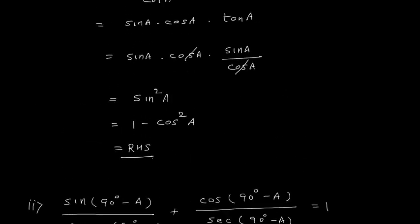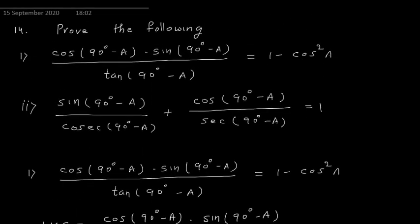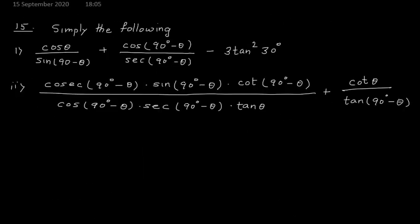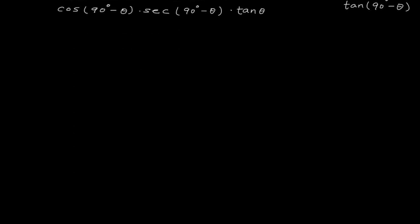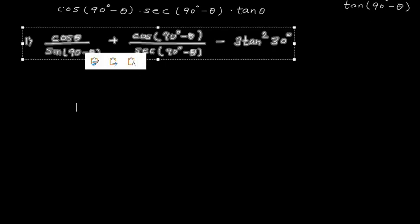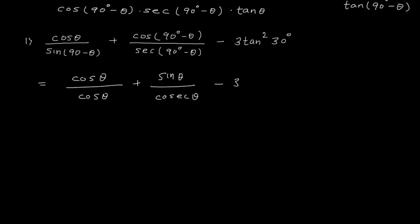Now question 15 — simplify. For the first problem: cosθ / sin(90° − θ) + sin(90° − θ)/sec(90° − θ) − 3tan²30°. This simplifies to cosθ/cosθ + sinθ/cosecθ − 3×(1/√3)². That is 1 + sin²θ − 3×(1/3) = 1 + sin²θ − 1 = sin²θ.